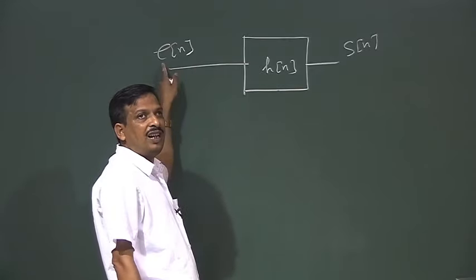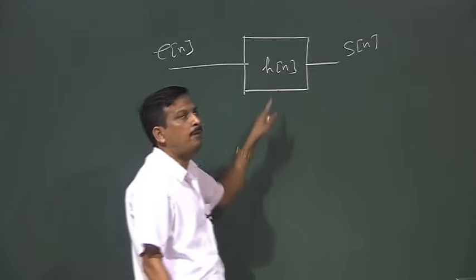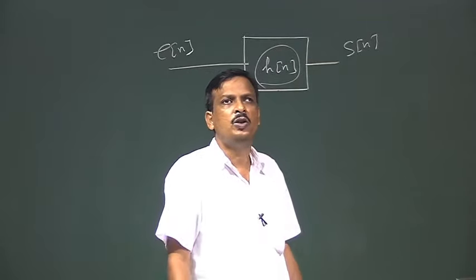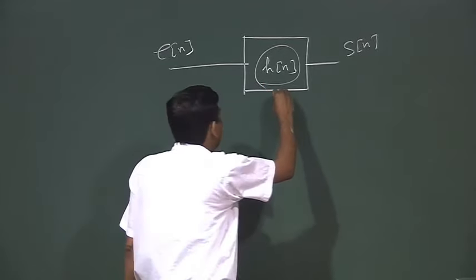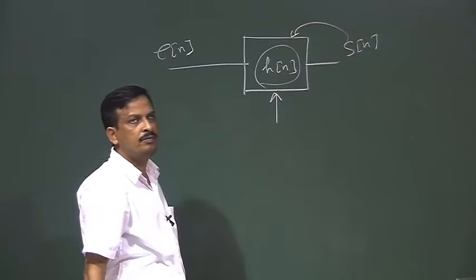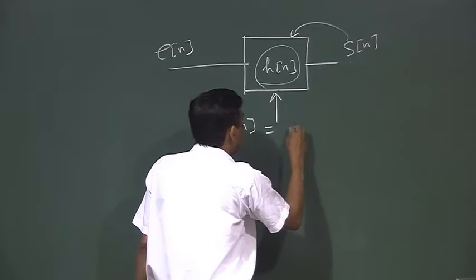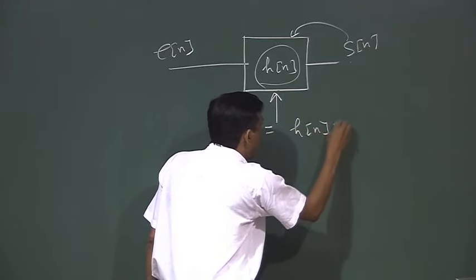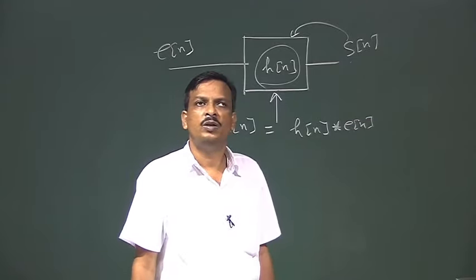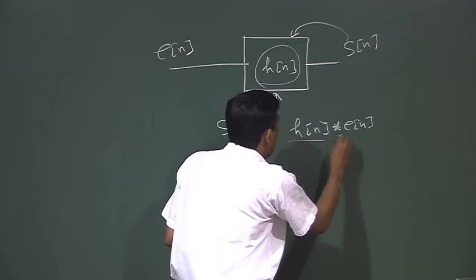Let us say there is a voiced signal. The excitation is present and that excitation is the same for all voiced signals. The only difference is the shape of the vocal tract, and different kinds of speech signals are produced. So our ultimate aim is to find out the actual representation of H(n) from S(n). I recorded the speech signal S(n), which is nothing but a convolution of H(n) convolved with E(n). Now I want to extract H(n) and eliminate E(n).